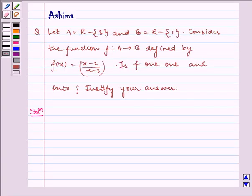Hello and welcome to the session. Let us discuss the following problem today. Let A is equal to R minus singleton 3 and B is equal to R minus singleton 1.